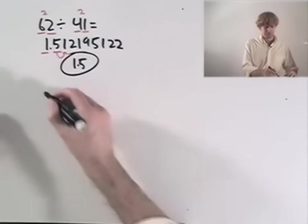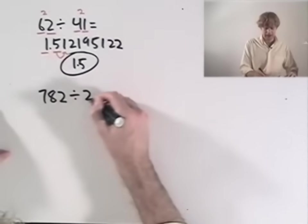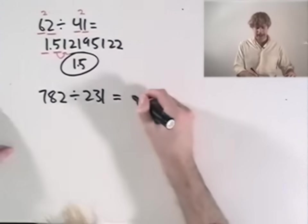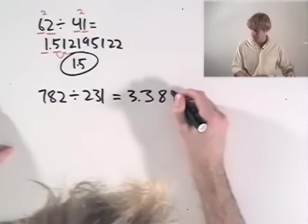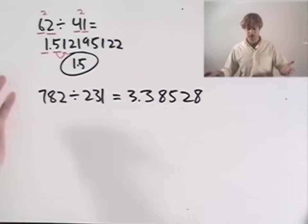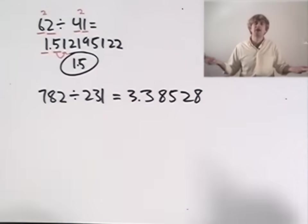Let's take a look at another example. Let's do 782 divided by 231. Put that into the calculator again. We get a really ugly answer out. 3.385 blah blah blah blah blah. I don't want to put that whole thing on my sheet either so I look at the numbers that I divided together.